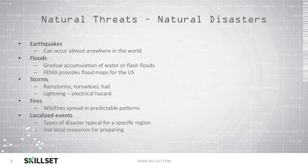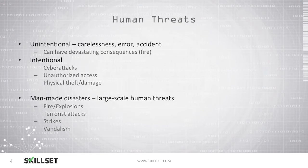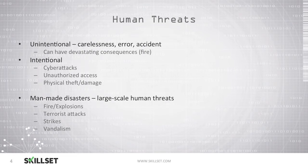If disasters are prone to occurring in your area, you will most likely have local resources available to help you prepare for these emergencies. Human threats can be unintentional, caused by an accident, error, or carelessness, but can have devastating consequences — such as an employee who misplaces a cigarette and causes a fire, or an employee who accidentally deletes all of your sensitive data. Humans can also cause intentional attacks such as cyber attacks or accessing resources they are not permitted to access.